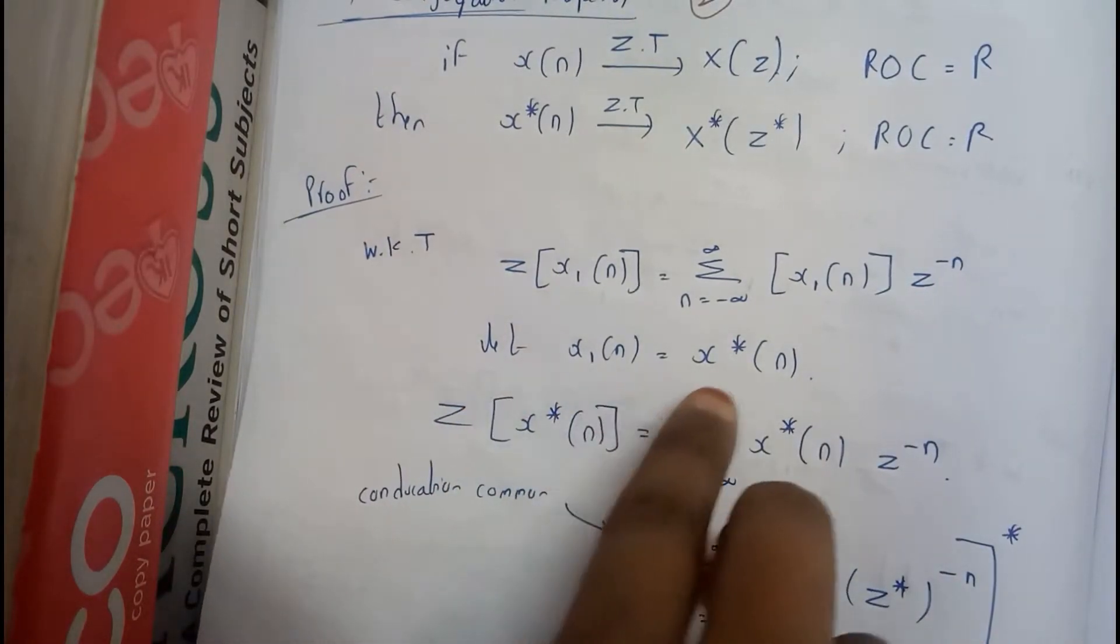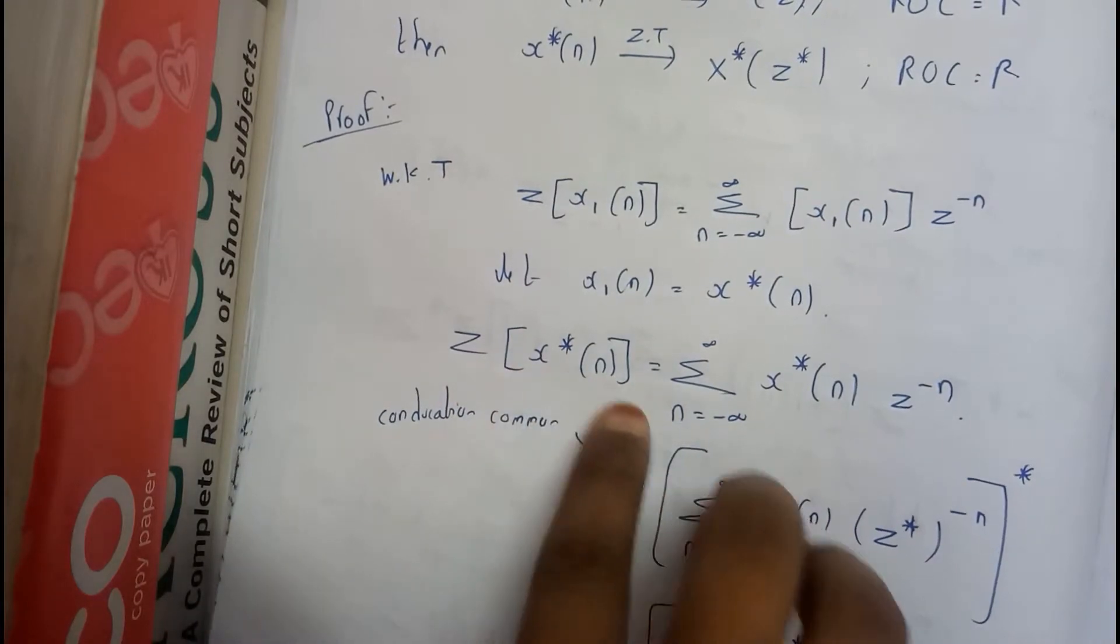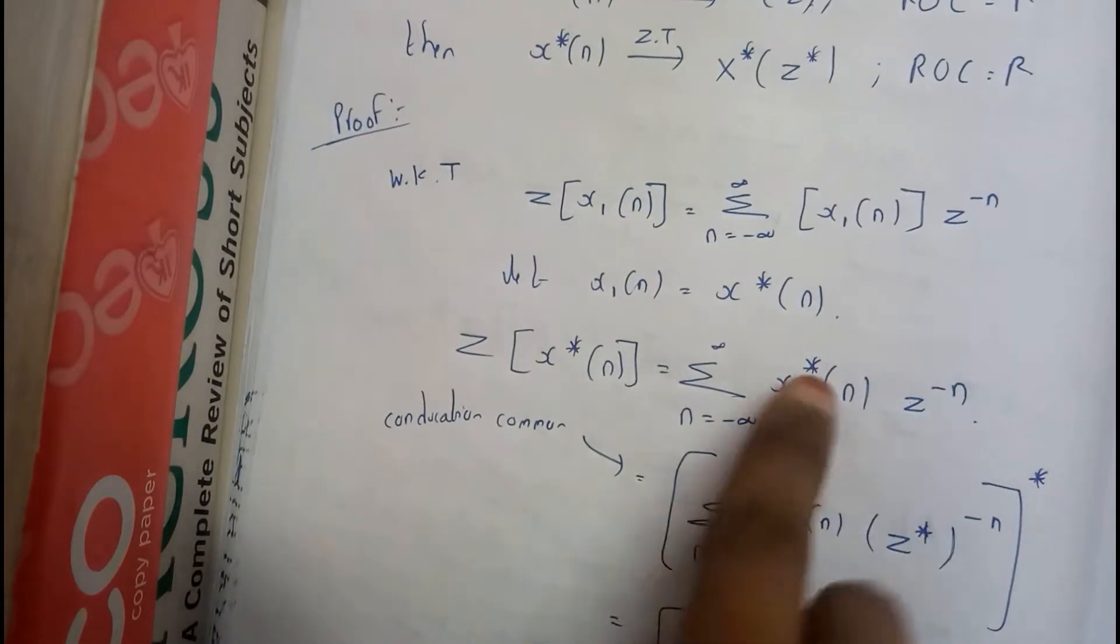Let x1 of n is equal to x conjugate of n. Z transform of x conjugate of n is equal to sigma n equal to minus infinity x conjugate of n into z to the power of minus n.